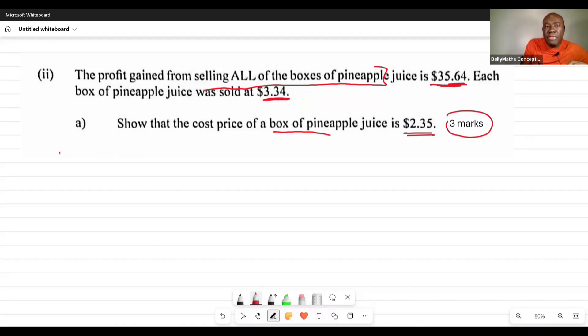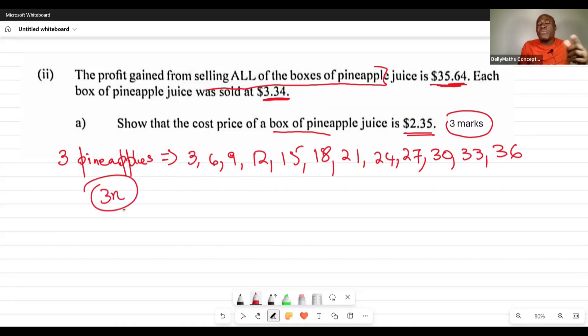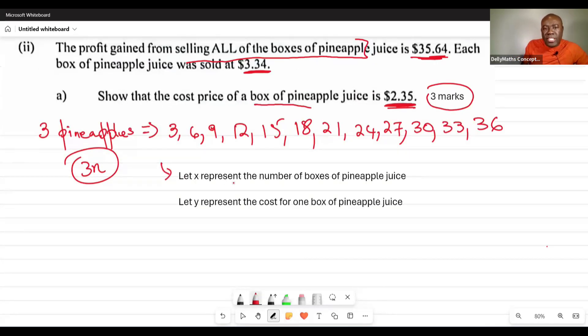Here's the approach: if we have 3 pineapple per case, it simply means that the number of pineapple juices are multiples of 3. The number of pineapple juices could be 3, 6, 9, 12, 15, 18, and so on—multiples of 3. Here's what we're going to do: let x represent the number of boxes of pineapple juice.